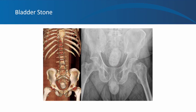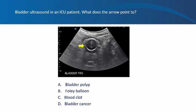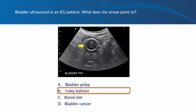Next question: this is a bladder ultrasound in an ICU patient — what does the arrow point to? Is it a bladder polyp, the balloon of a Foley catheter, a blood clot, or bladder cancer? We should not evaluate bladder cancer, polyps, or wall characteristics when the bladder is not filled with urine — doing so risks false positives. The arrow points to a very well-defined, fluid-filled structure, which is most likely the balloon of the Foley catheter. The surrounding area is the decompressed bladder.